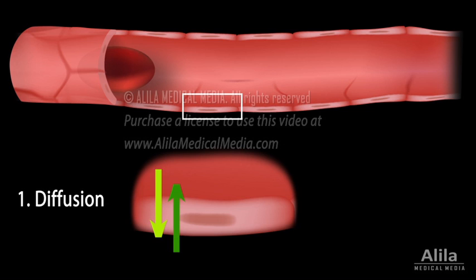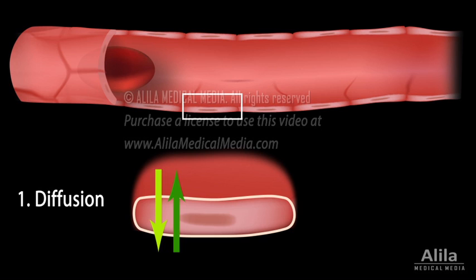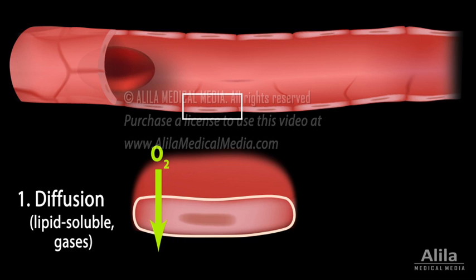Diffusion through the plasma membranes of endothelial cells: the hydrophobic nature of the cell membrane makes it intrinsically permeable to small lipid-soluble molecules and small gases. Oxygen moves down its concentration gradient from the blood to the surrounding tissue, while carbon dioxide diffuses in the reverse direction.